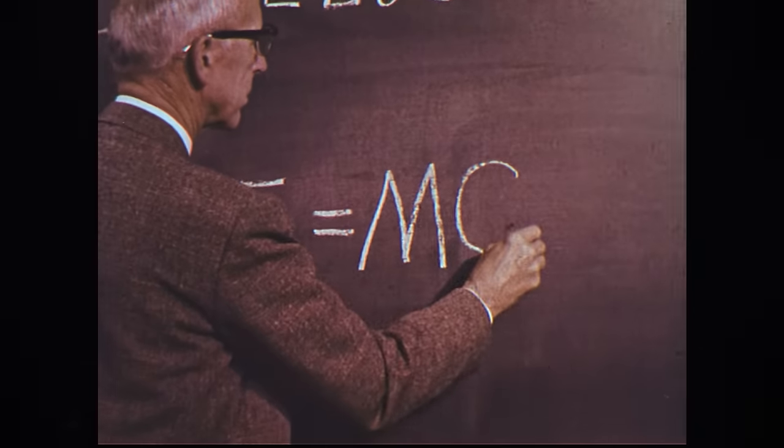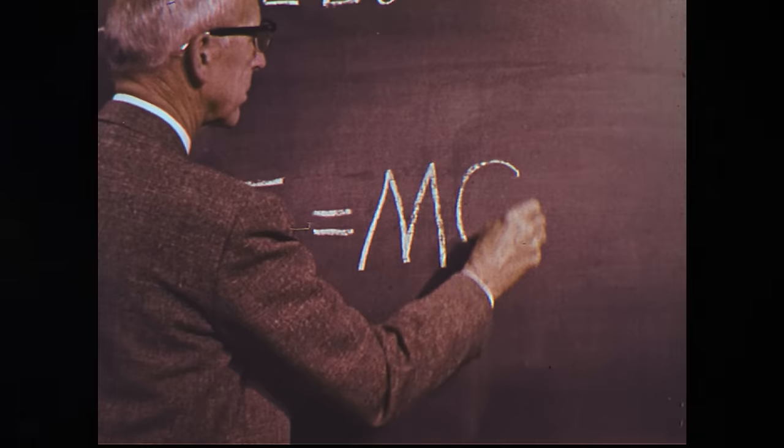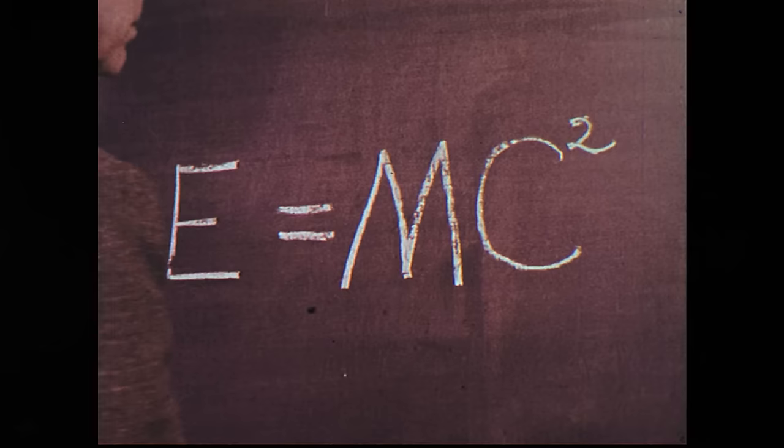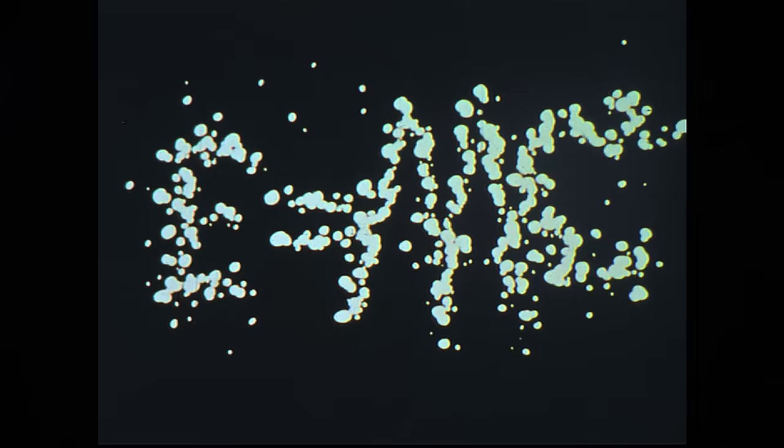It is by far the most famous equation in the history of science and one of the shortest: E=mc². Derived by Albert Einstein in 1905, the equation describes the relationship between mass and energy, stating that the total energy contained in a given piece of matter is equal to its mass times the speed of light squared.